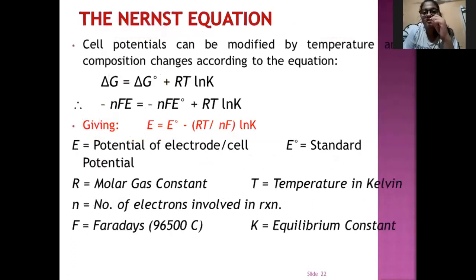The Nernst equation. Cell potentials can be modified by temperature and composition changes according to the equation. The equation is delta G equals delta G naught plus RTlnK. Putting the value of delta G and delta G naught, the equation is minus NF E equals minus NF E naught plus RTlnK. Giving E equals E naught minus RT upon NF into lnK. Where E equals potential of electrode or cell potential. R is molar gas constant. N is number of electrons involved in the reaction. F is Faraday's which is 96500 coulombs. E naught is the standard potential. T is temperature in Kelvin and K is the equilibrium constant.